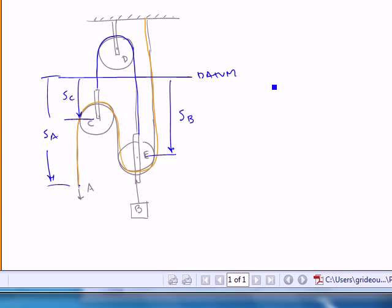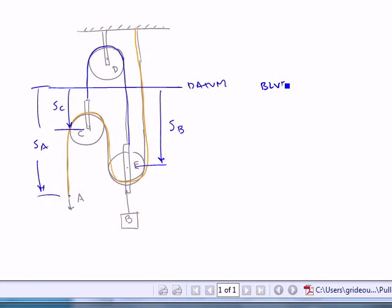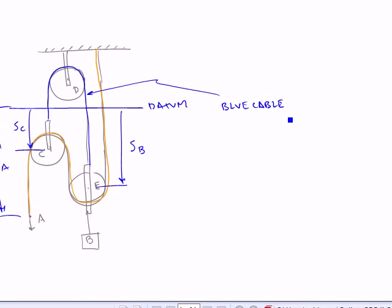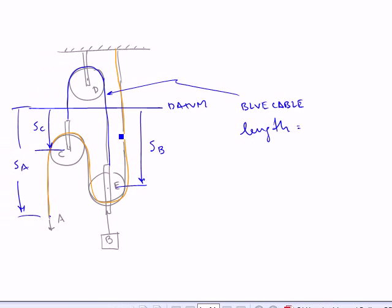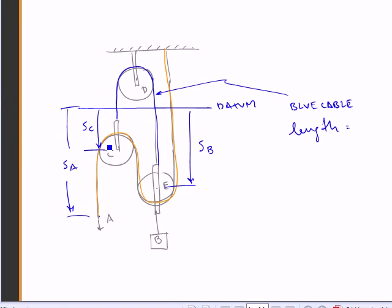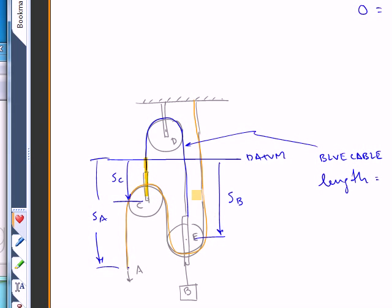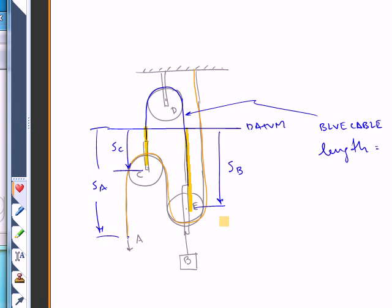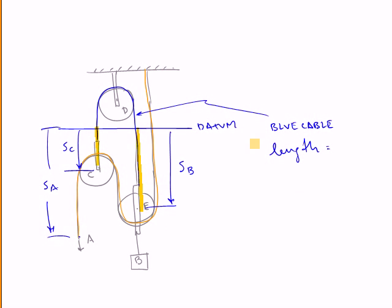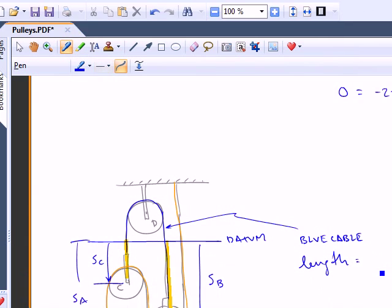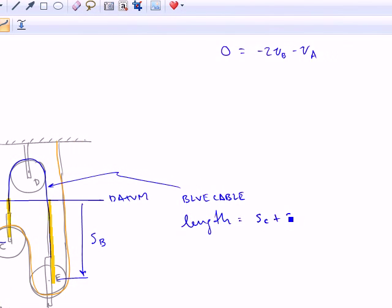And now I have to try to express the length of each cable in terms of those parameters. So, what I'll call the blue cable. And if you print this out in black and white, it's that one. Length equals constant stuff plus, let's see here. We've got an SC. Get my highlighter. We've got an SC there. And we've got an SB here. And that should be about it. So the length is going to be SC plus SB.